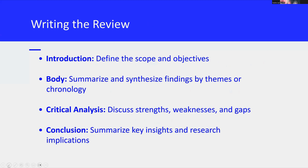Now we get to writing the review, which involves several key sections that together create a coherent and comprehensive document. For the introduction, begin by defining the scope and objectives of your review — this section should outline what your review will cover and the context for the literature that will be discussed. Next, in the body of your review, summarize and synthesize the findings from your sources. Organize this section according to the themes or in chronological order, whichever you established earlier, presenting the key research and showing how it fits together.